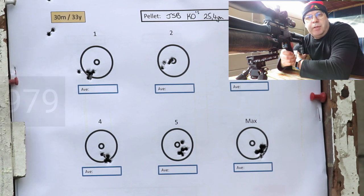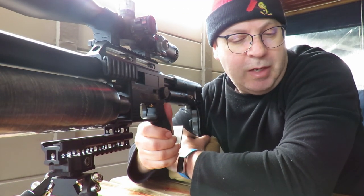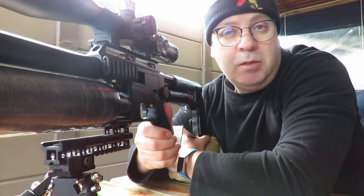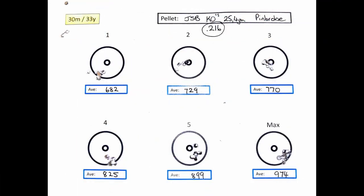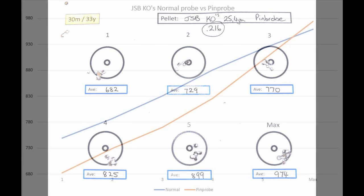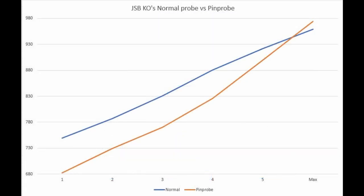That was some impressive shooting at around about 975 feet a second. These weren't my best groupings at all, yet some improvement there. But the weirdest thing is the difference in speed. I thought that the pin probe would be a lot faster out of the barrel than the normal pallet probe, but the opposite happened. The pin probe only caught up at maximum power.